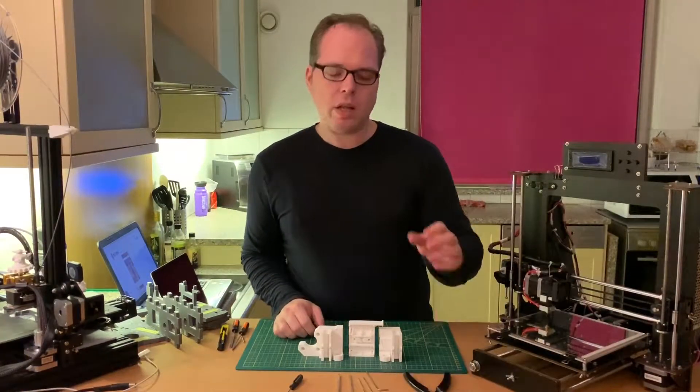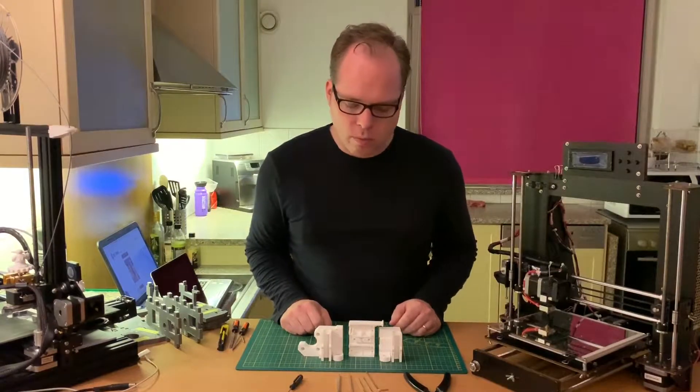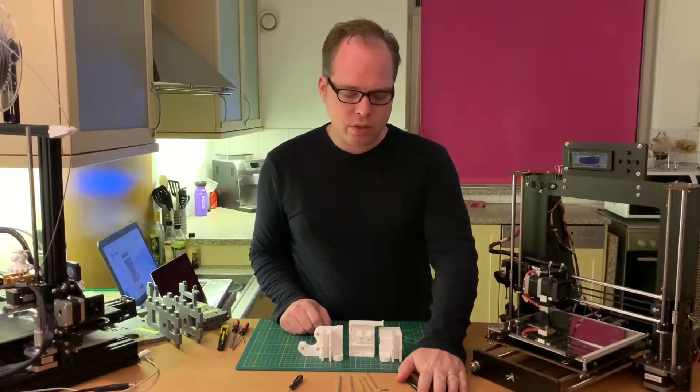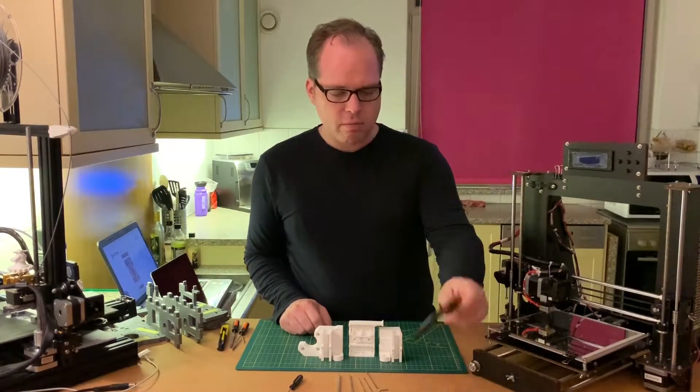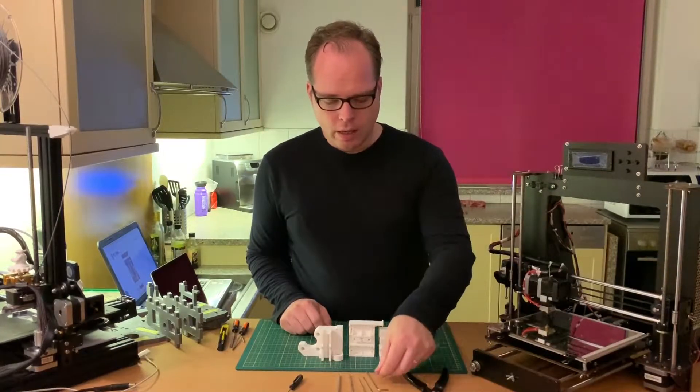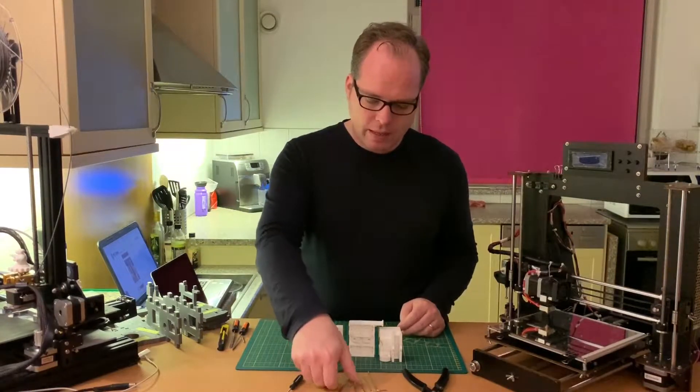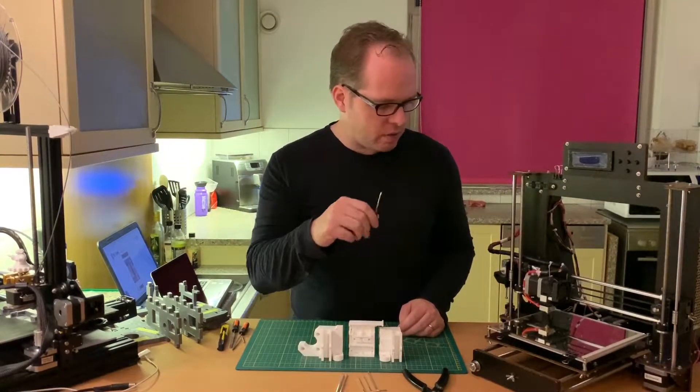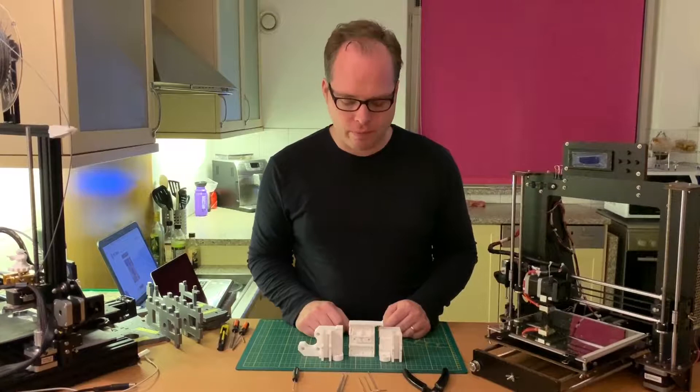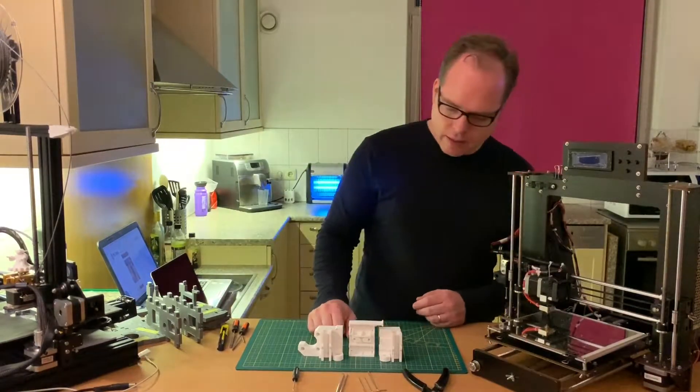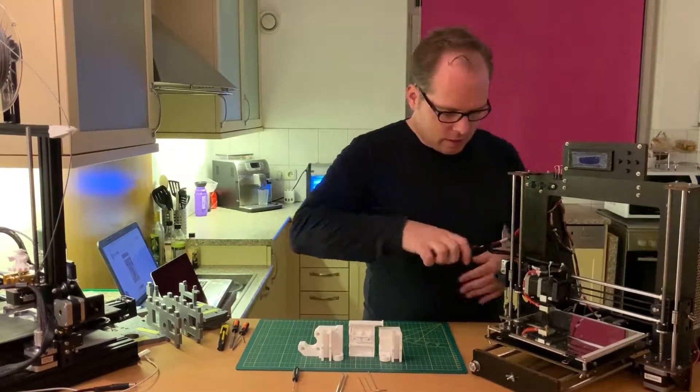When we are going to install it, we are going to use some tools. Like a cutter tool, the pliers, like this one. Also some allen keys. And also maybe if it is needed, a screwdriver. So let's get first cutting the tie wraps.